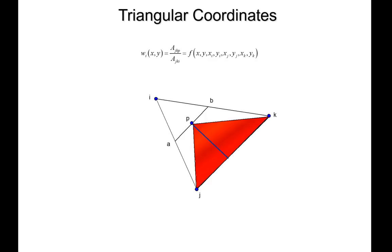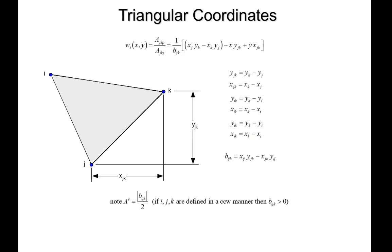Based on this, we can derive an equation for w sub i. Given the coordinates of points i, j, and k and the coordinates of point p as x, y, it's straightforward to calculate the area of triangle ajkp and the area of the full element. The ratio of those two areas is the value of w sub i. We won't derive it here as it's somewhat tedious, but here's the final equation.